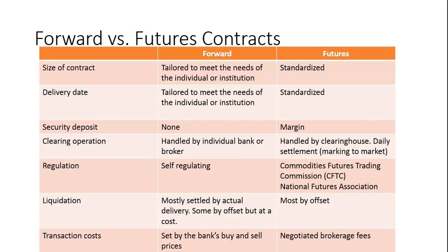Regarding liquidation — how positions are closed out — forward contracts are mostly settled by actual delivery. For example, if a firm needed one million pounds sterling and went to JPMorgan Chase, JPMorgan would provide the pounds and the firm would pay the appropriate amount of dollars. In the futures market, because you don't know who's on the other side of the transaction, it's usually done by offset — if you bought a futures contract, selling an identical contract offsets your position. Transaction costs are set by banks' buy and sell prices in the forward market, but by brokerage commissions in the futures market.